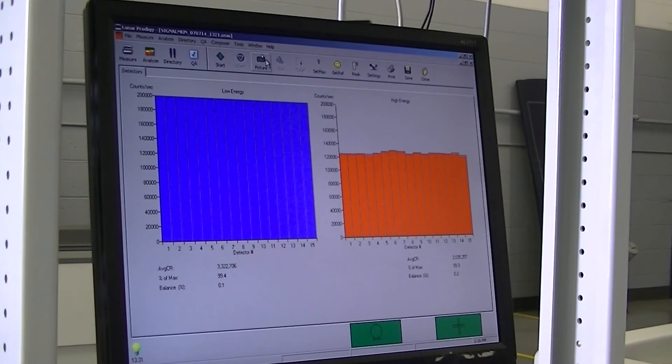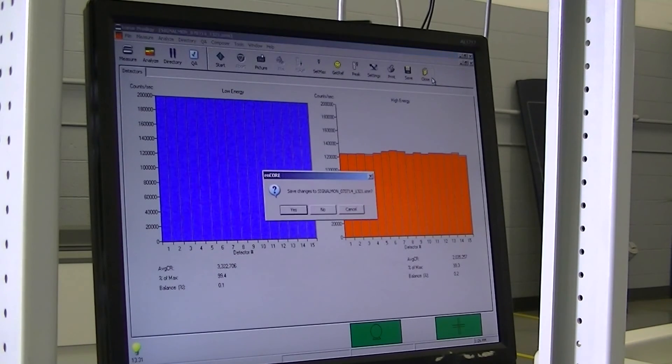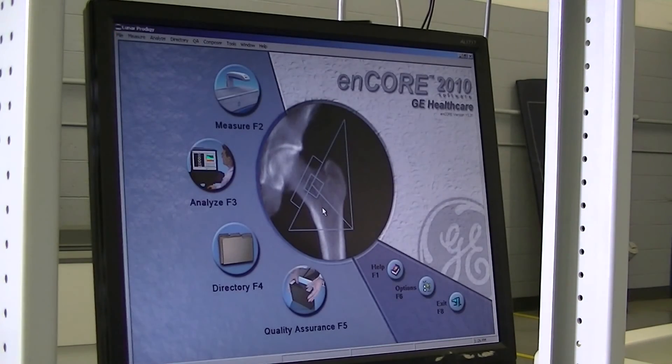The next test after signal monitor will be beam wobble. Beam wobble will check the level of the table. You always want to make sure the table is level so the x-ray is stable. So from here, we'll go to Measure.